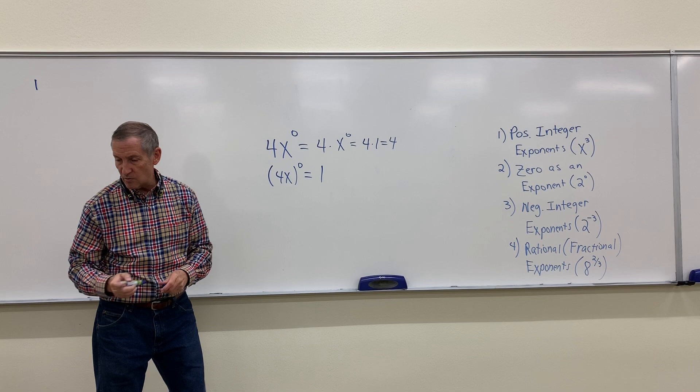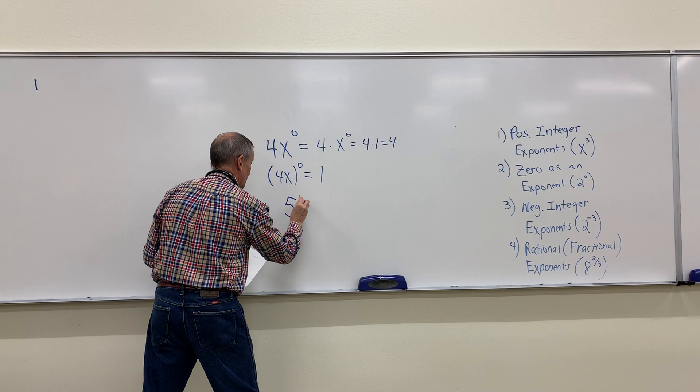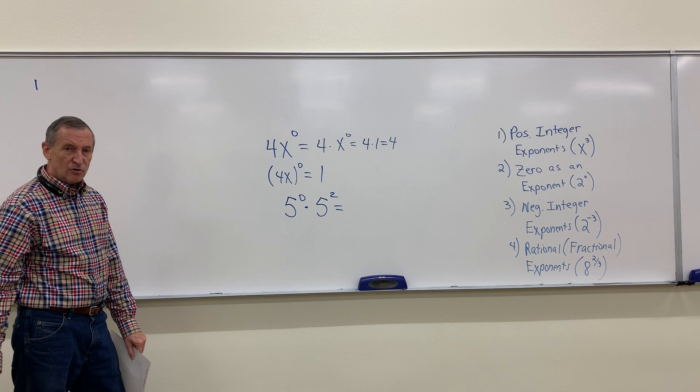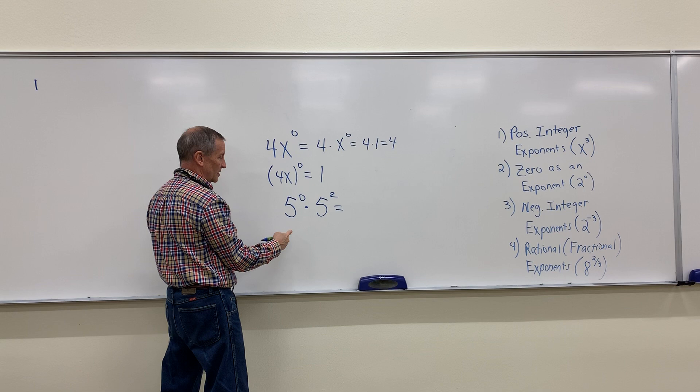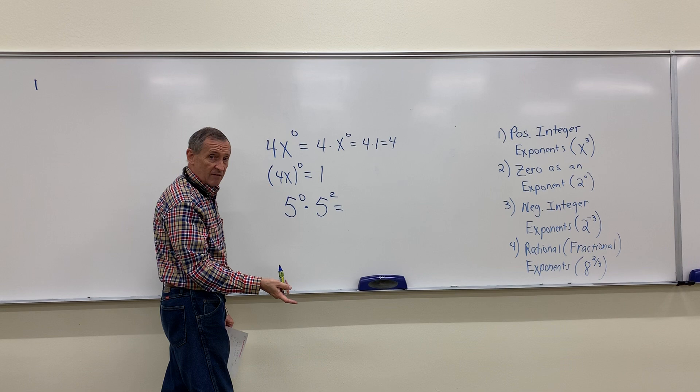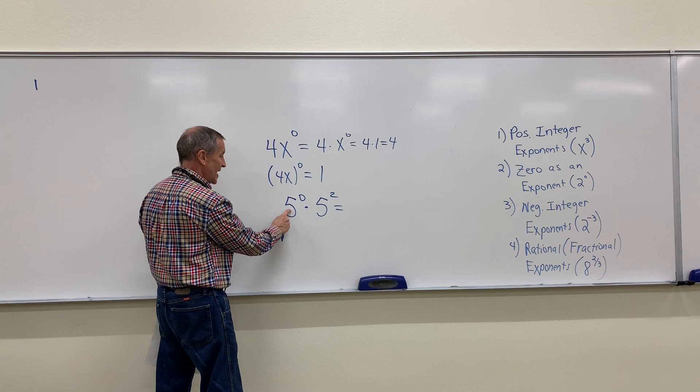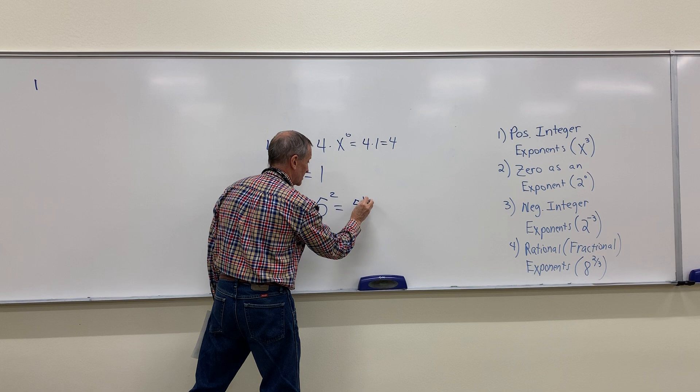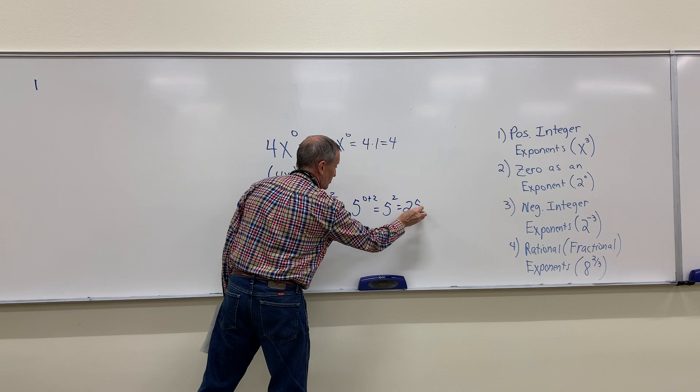Here's one from your Hawks assignment. You can do this a couple of different ways. You can say five to the zero power is one, and five squared is 25, so one times 25 is 25. Or you could apply the first property of exponents: since you have the same base, add the exponents — zero plus two is two — and five squared is just 25. Either way, you get 25.